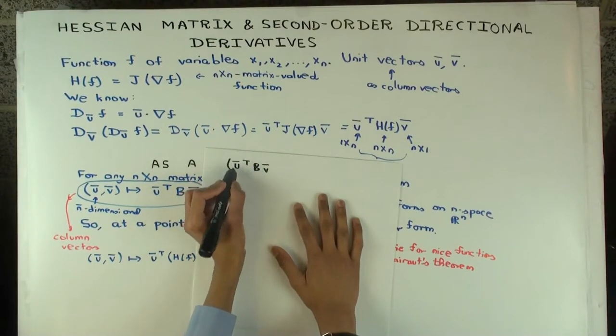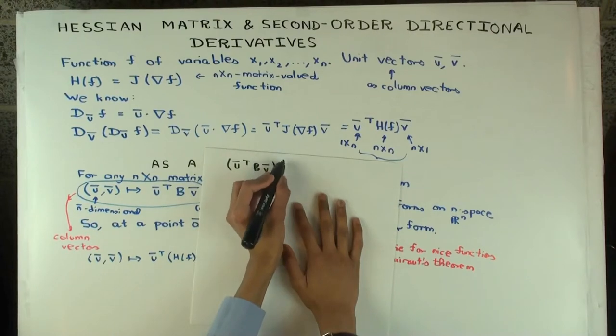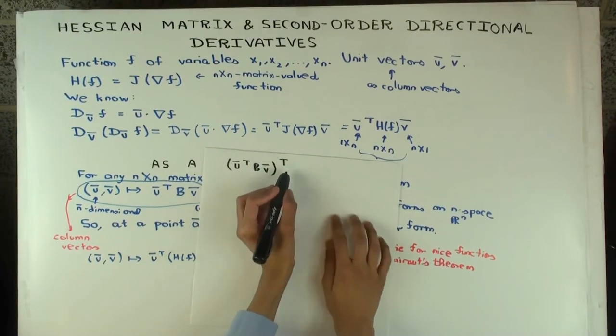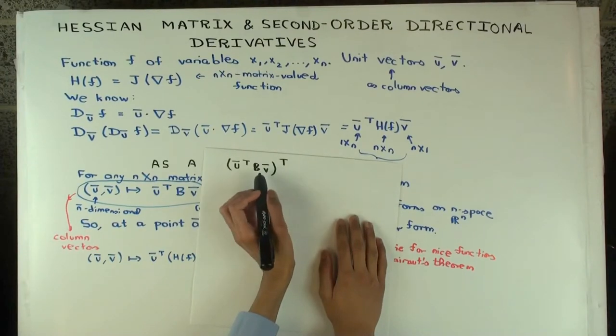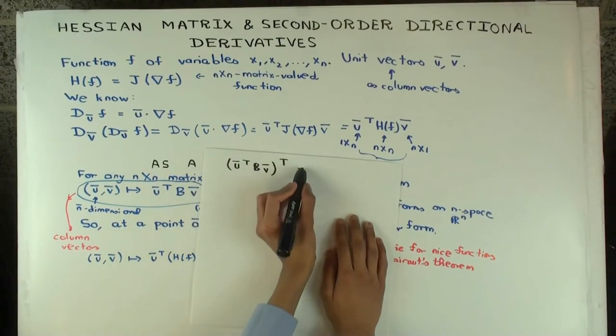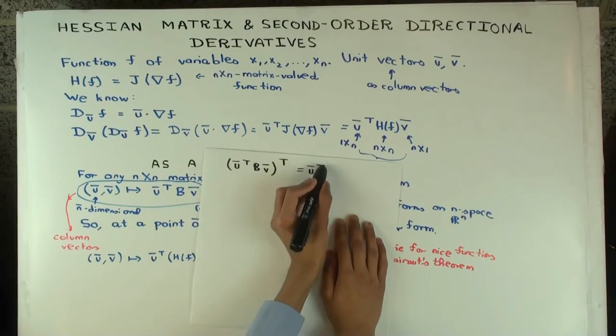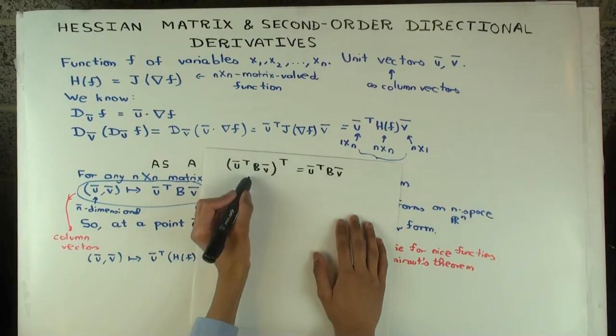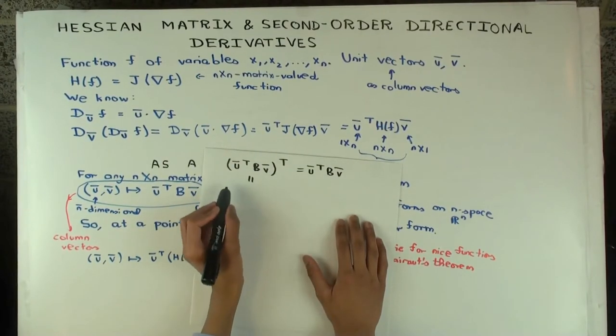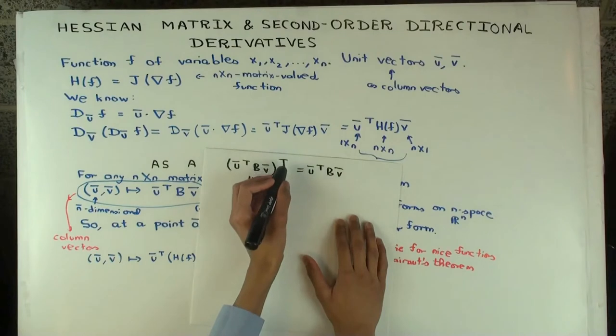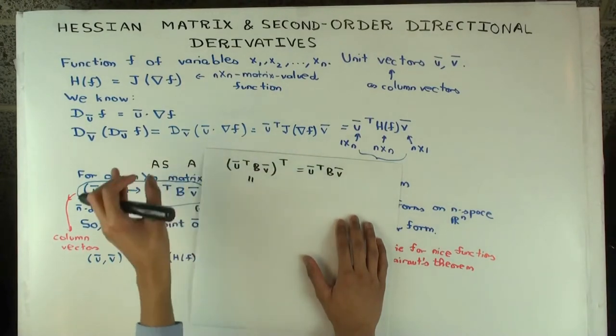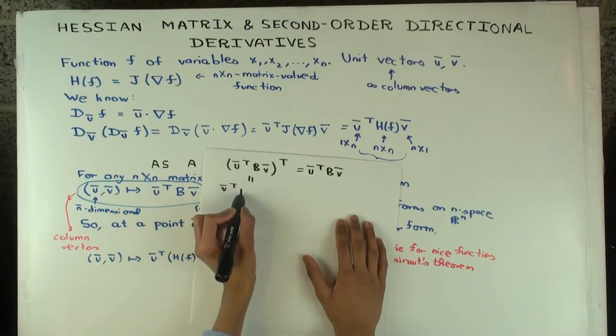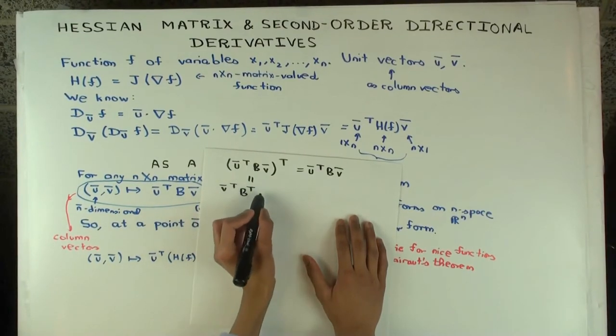Then, what is the transpose of this? Well, first of all, it should be the same as V transpose B... Well, first of all, it should be the same as what you started with, because it's just a scalar one cross one matrix, the product. So it's the same as this. Now we can simplify it another way. So the product transposed is the product of the transposed is in the reverse order. So it's V transpose times B transpose times U double transpose, which is just U.